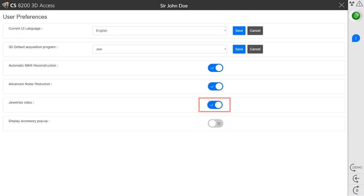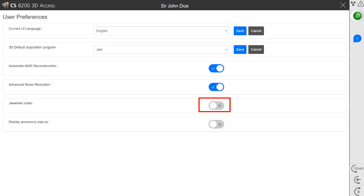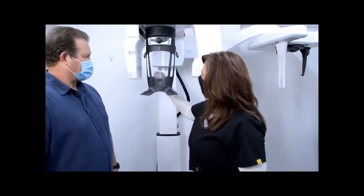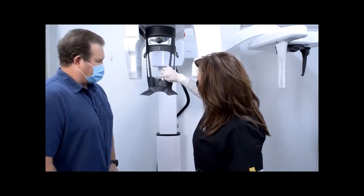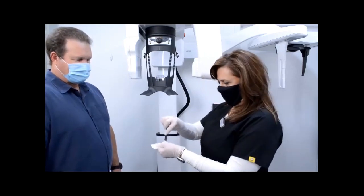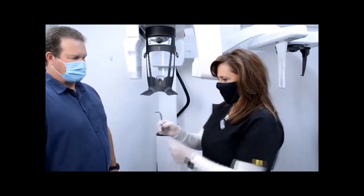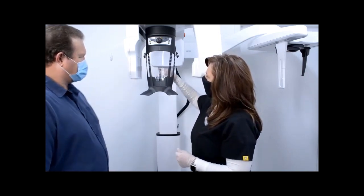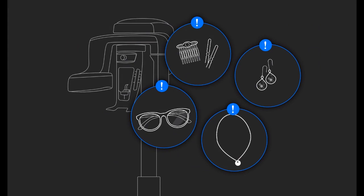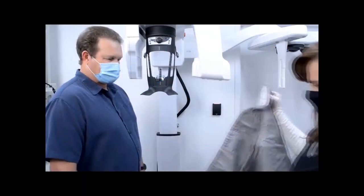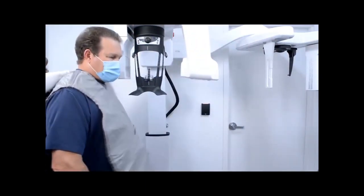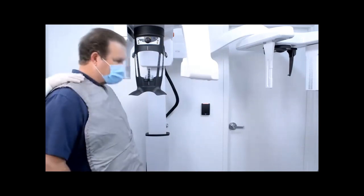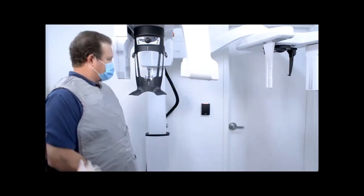You can also toggle the switch here to disable the jewelry video. Position the panoramic chin rest and make sure it clicks firmly into place. Cover the bite block with a plastic hygienic barrier and ensure it is completely covered. Fit the bite block to the panoramic chin rest. Before the patient enters the unit, ask the patient to remove any metal objects above the neck, including jewelry, glasses, hearing aids, prosthesis, metal hair clips, or other metal objects. Place the lead apron on the patient and instruct the patient to stand next to the unit.